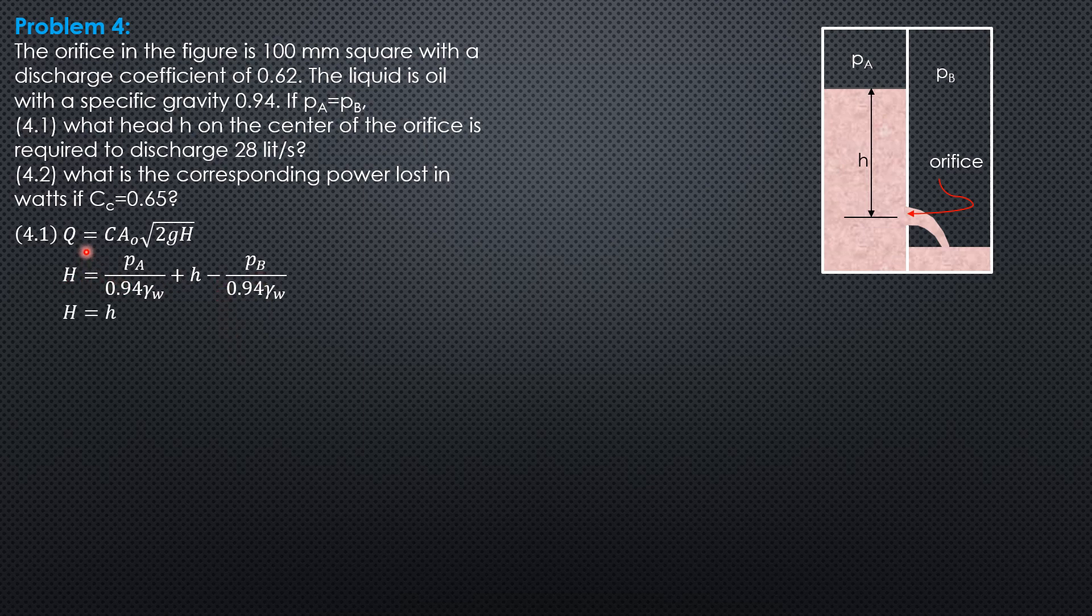Then substitute: 0.028 equals 0.62 times 0.1 squared. The orifice is 100 mm square, so 0.1 times square root of 19.62 times h. Solving for h, h is 1.04 meters.